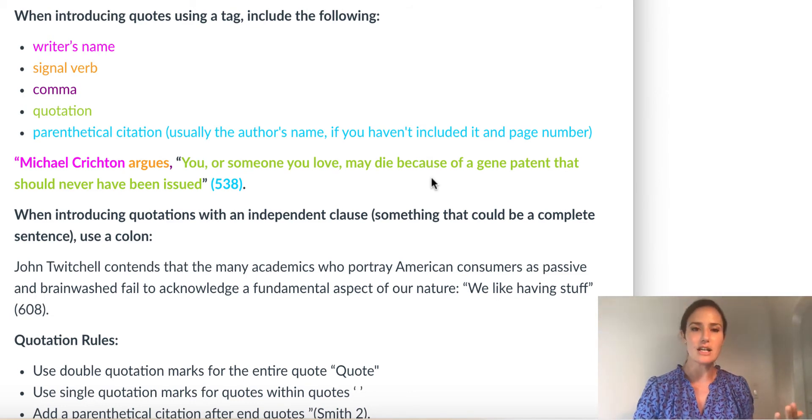Don't put the word page or P period, just the last name and the number itself. If you already have mentioned the writer's name when you introduce the quote, then you can just put the page number in parentheses and your period goes outside the parentheses because it's the period of your sentence. Even if what you're quoting ended with a period, you take that off and you include your period at the end of the sentence.